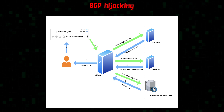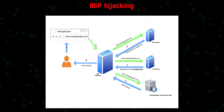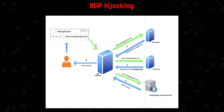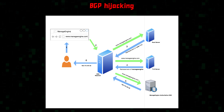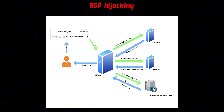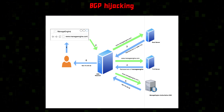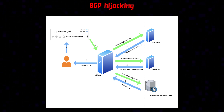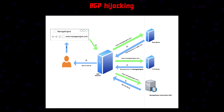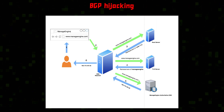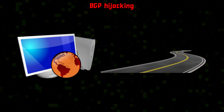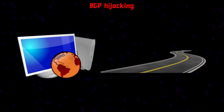DNS — domain name system — servers provide the IP address, but BGP provides the most efficient way to reach that IP address. Roughly speaking, if DNS is the internet's address book, then BGP is the internet's roadmap.